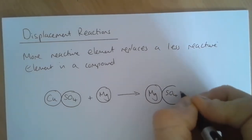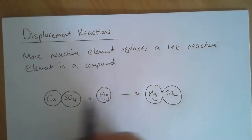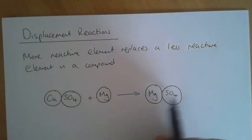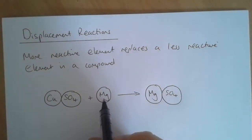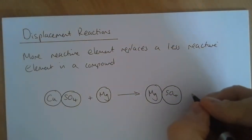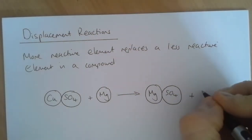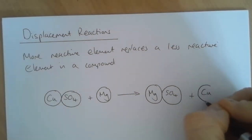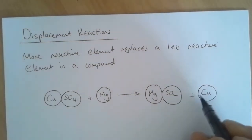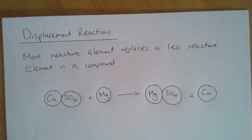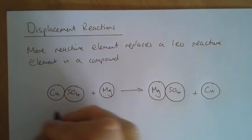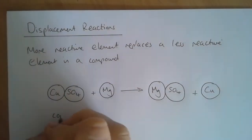The metal element that's now in a compound with the sulfate ion is magnesium. So magnesium has replaced copper to produce magnesium sulfate, and then copper itself has been kicked out — it has been removed. We can write that as a word equation.